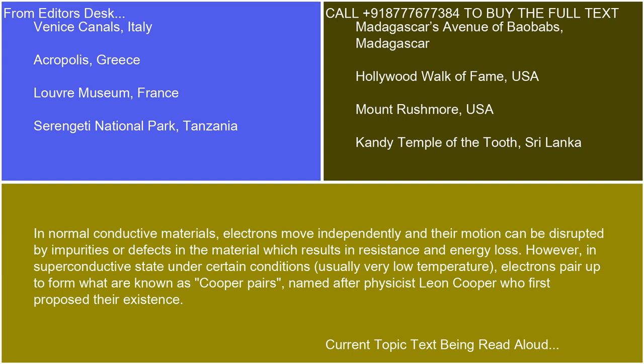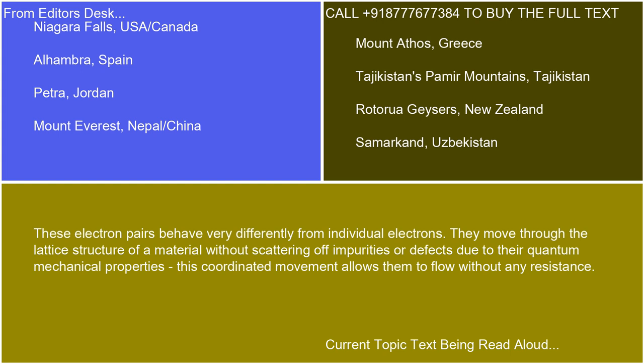However, in a superconductive state under certain conditions — usually very low temperature — electrons pair up to form what are known as Cooper Pairs, named after physicist Leon Cooper, who first proposed their existence. These electron pairs behave very differently from individual electrons. They move through the lattice structure of a material without scattering off impurities or defects due to their quantum mechanical properties. This coordinated movement allows them to flow without any resistance.